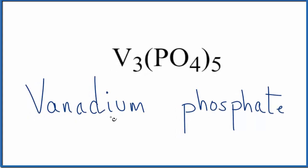And so far, we have the name vanadium phosphate for V3PO45. Remember, we said vanadium is a transition metal. So we're going to need to write Roman numerals here to show the charge on the vanadium.